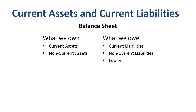Asset accounts are grouped in either current assets or non-current assets, and liability accounts into current liabilities or non-current liabilities. The difference between current and non-current in both cases is within one year versus longer than one year.